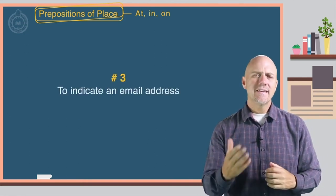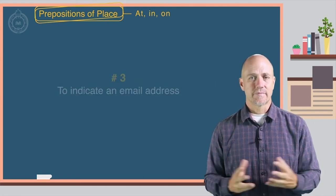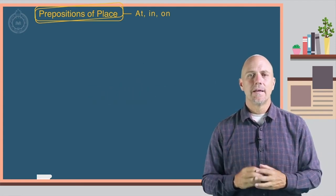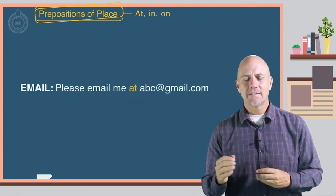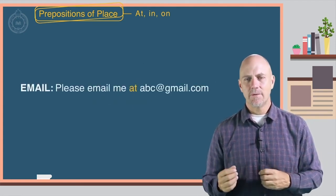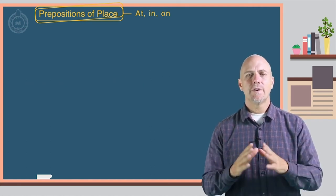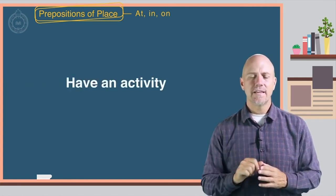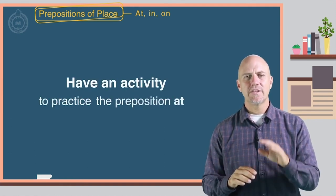Number three: to indicate an email address. Here is an example. Please email me at abc at gmail dot com. The video will now stop and you will have an activity to practice the preposition at.